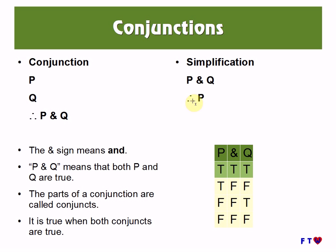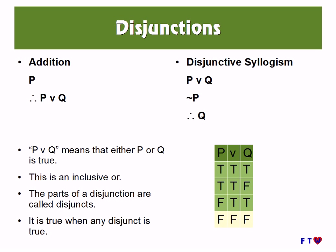In the previous video we learned about conjunction and simplification. Conjunction allows us to infer a conjunction of two statements given as separate premises. Simplification allows us to infer the conjunct of a conjunction. We also learned about addition and disjunctive syllogism. Addition allows us to infer a disjunction from a single premise — it is the disjunction of that premise with another proposition. With disjunctive syllogism, we have the disjunction of two propositions, we deny one of them, and so we are able to infer the other one. If one is false, the other must be true.